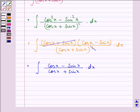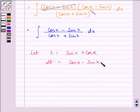Now let t be equal to sin x + cos x, which is the denominator. So dt will be equal to (cos x - sin x) dx.